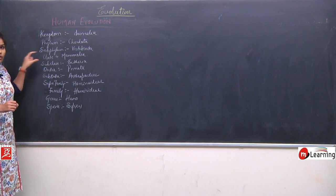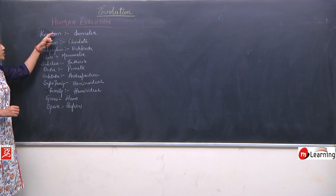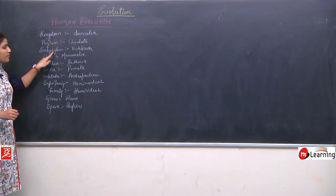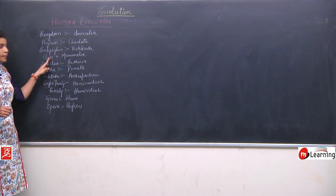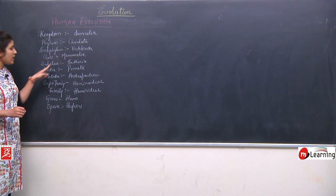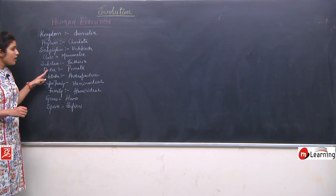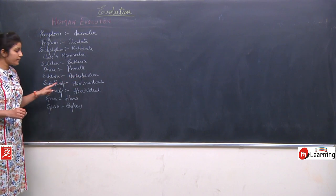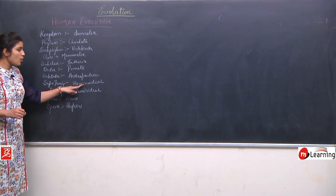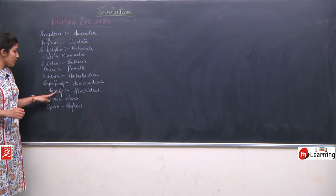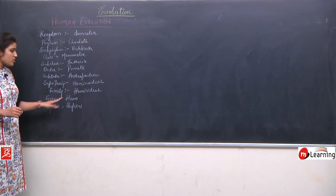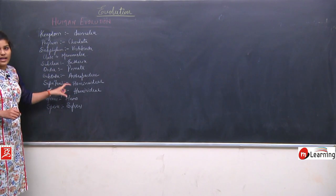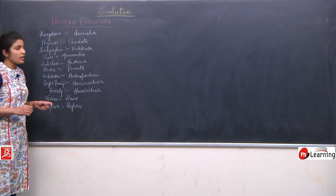This is the hierarchy of humans. They belong to Kingdom Animalia, Phylum Chordata, Subphylum Vertebrata, Class Mammalia, Subclass Eutheria, Order Primata, Suborder Anthropoidy, Superfamily Hominoidea, Family Hominidae, Genus Homo, and Species sapiens.